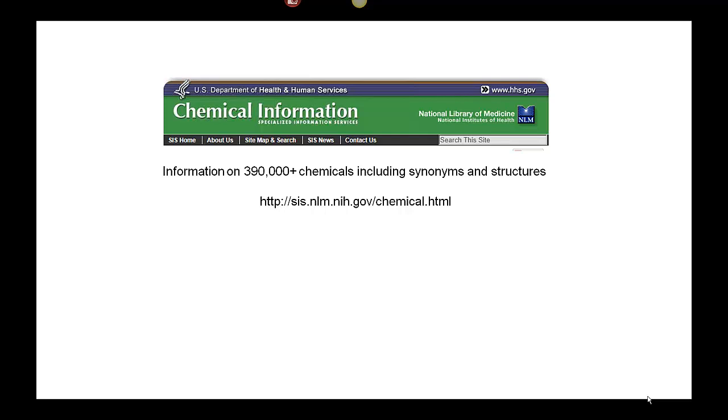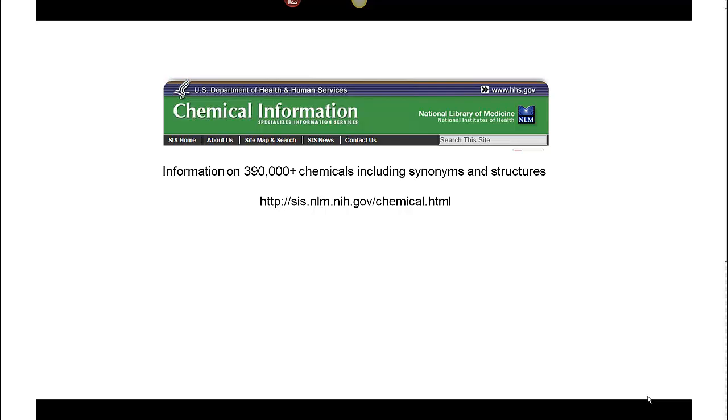Another place to look up chemical names and numbers is the ChemID database. Links to both of these tools are available from the CHEM 115 Library Guide. Let's take a look at how to use them.